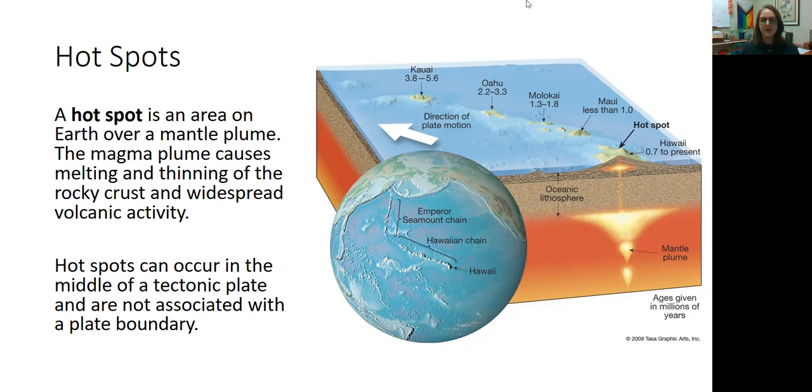When this happens, when you have a mantle plume well up towards the crust, it's going to apply pressure on the crust, heat up the crust, and this causes the crust to thin and volcanoes to form right above that plume. So hot spots can occur in the middle of a tectonic plate, and they're often associated with the creation of volcanoes right on top of them.